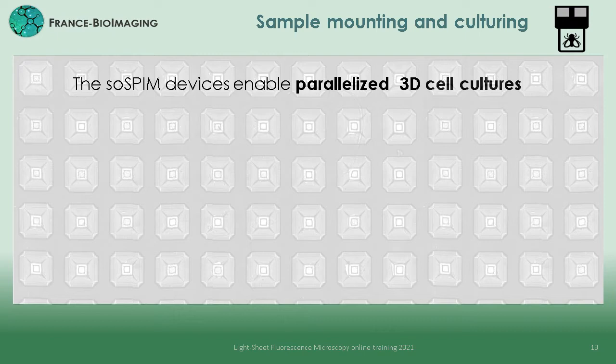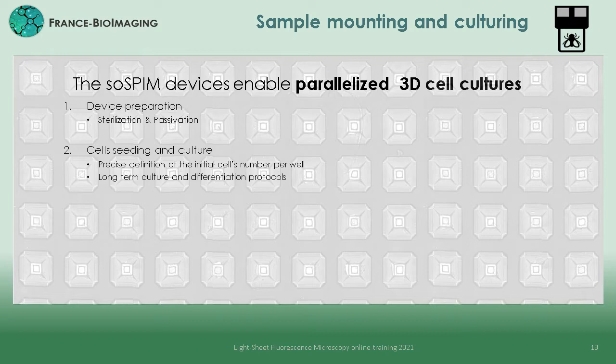First, we will look at the sample preparation and mounting protocol. In particular, we will see that the use of the SOSPIN device enables mounting and culturing hundreds to thousands of samples at the same time into a unique support. We will first go through the SOSPIN device preparation and functionalization protocol. Then we will see how to seed and culture cells of interest into the SOSPIN wells. Even if I will demonstrate this step culturing simple spheroids for clarity, the same principles could be applied to grow organoids as long as the appropriate culture protocol is followed.